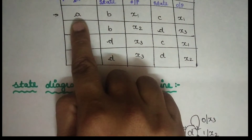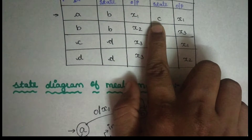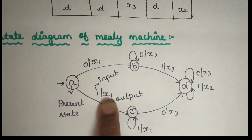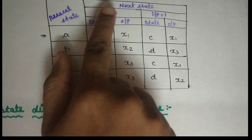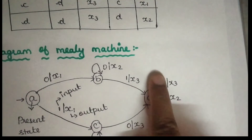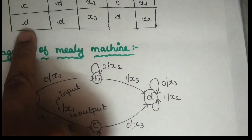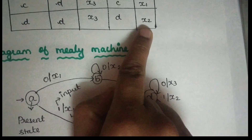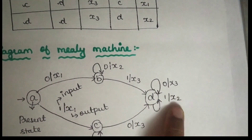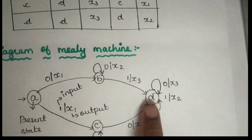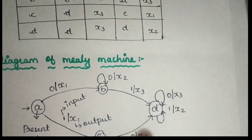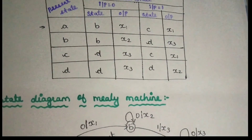For example, state A with input 1 goes to state C, and that output is x1. State A with input gives output x1. When state D has input 0, the output is x3. When state D has input 1, the output is x2. This confirms that the output depends on the present state and the present input — that is the Mealy machine. Let's understand the state table and state diagram; if you know this, you will be able to solve any problems. Thank you.